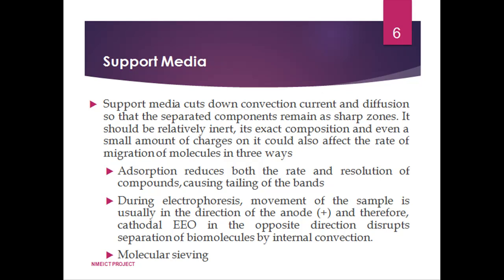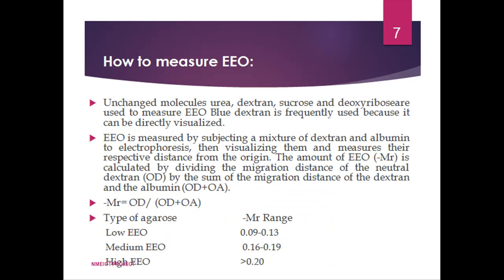How to measure EEO — that is, electroendoosmosis? Uncharged molecules such as urea, dextrin, sucrose, and deoxyribose are used to measure EEO. Blue dextrin is frequently used because it can be directly visualized. EEO is measured by subjecting a mixture of dextrin and albumin to electrophoresis, then visualizing them and measuring their relative distance from the origin. The amount of EEO is calculated by dividing the migration distance of neutral dextrin by the sum of the migration distances of dextrin and albumin.